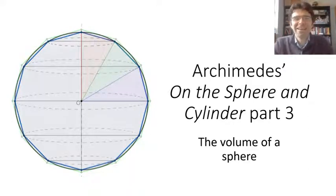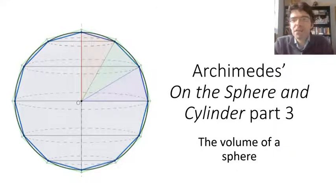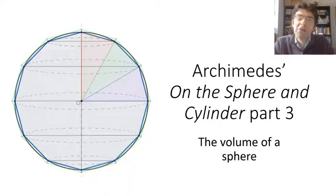Welcome everyone. So far in this series on Archimedes' work on the sphere and cylinder, we've looked at how he calculated the surface areas of cylinders, isosceles cones and spheres. Now we're going to move on to his formula for the volume of a sphere.